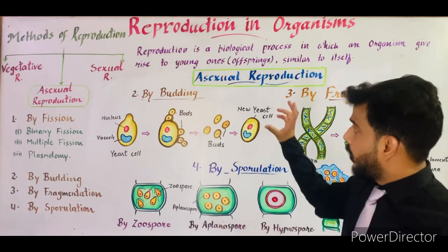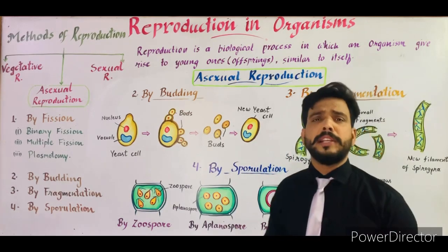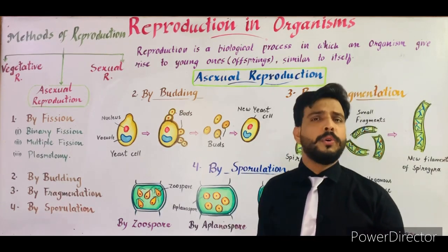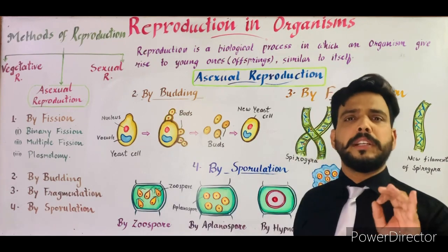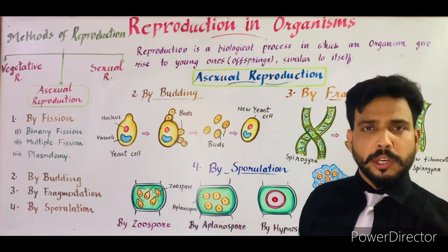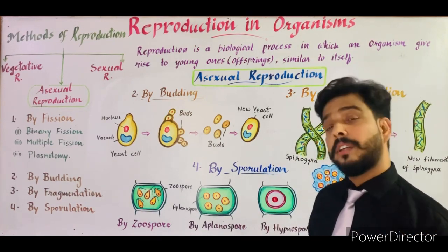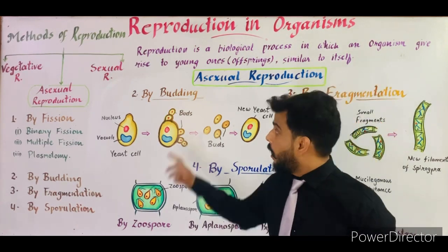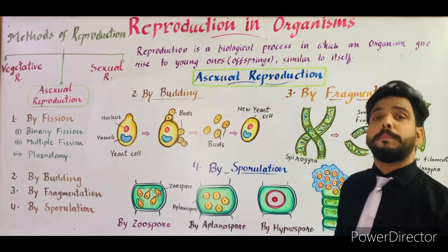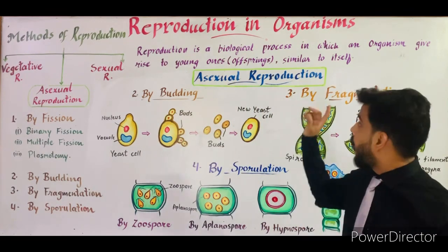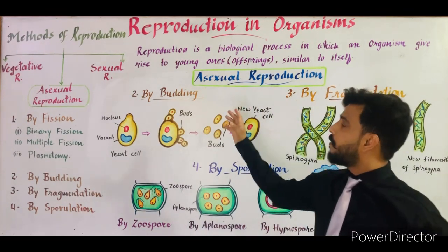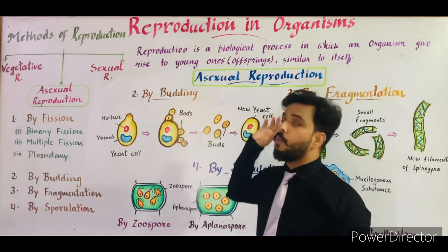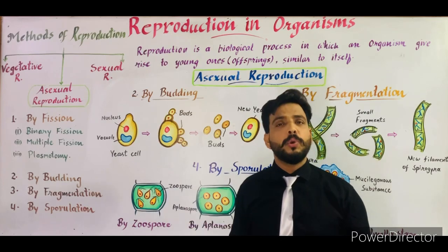Reproduction in Organisms — the definition: reproduction is a biological process in which an organism gives rise to young ones. As we all know, to continue their existence each organism reproduces, and with the help of reproduction they produce their young ones.